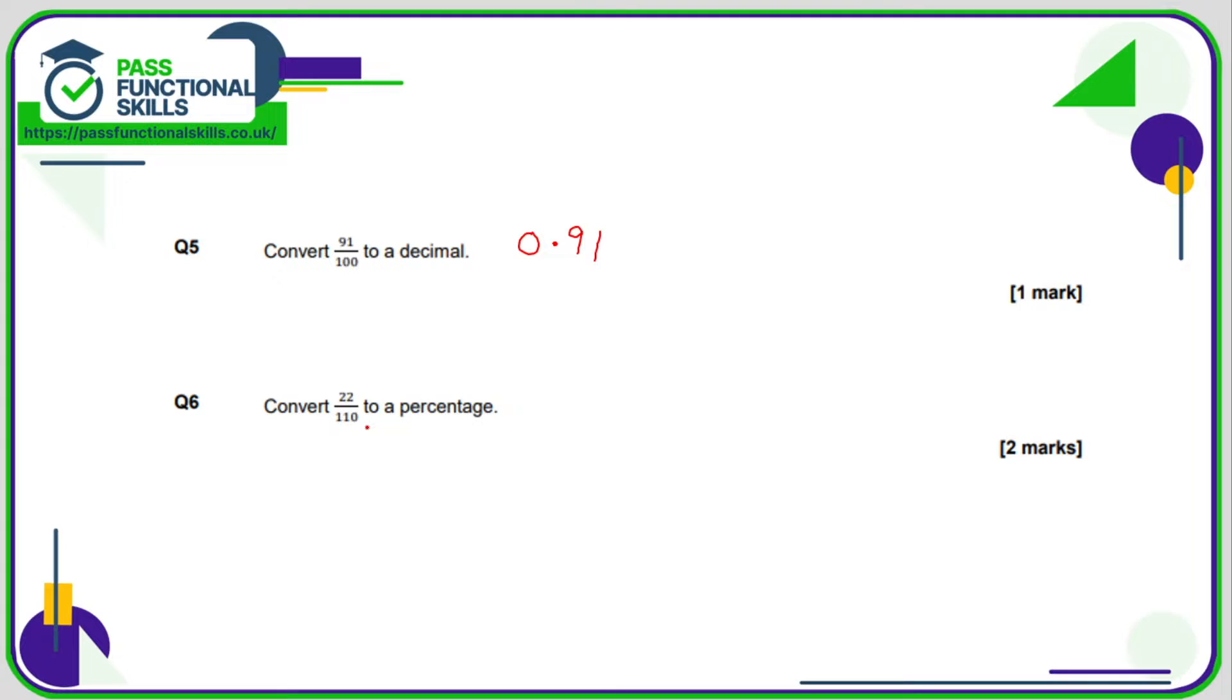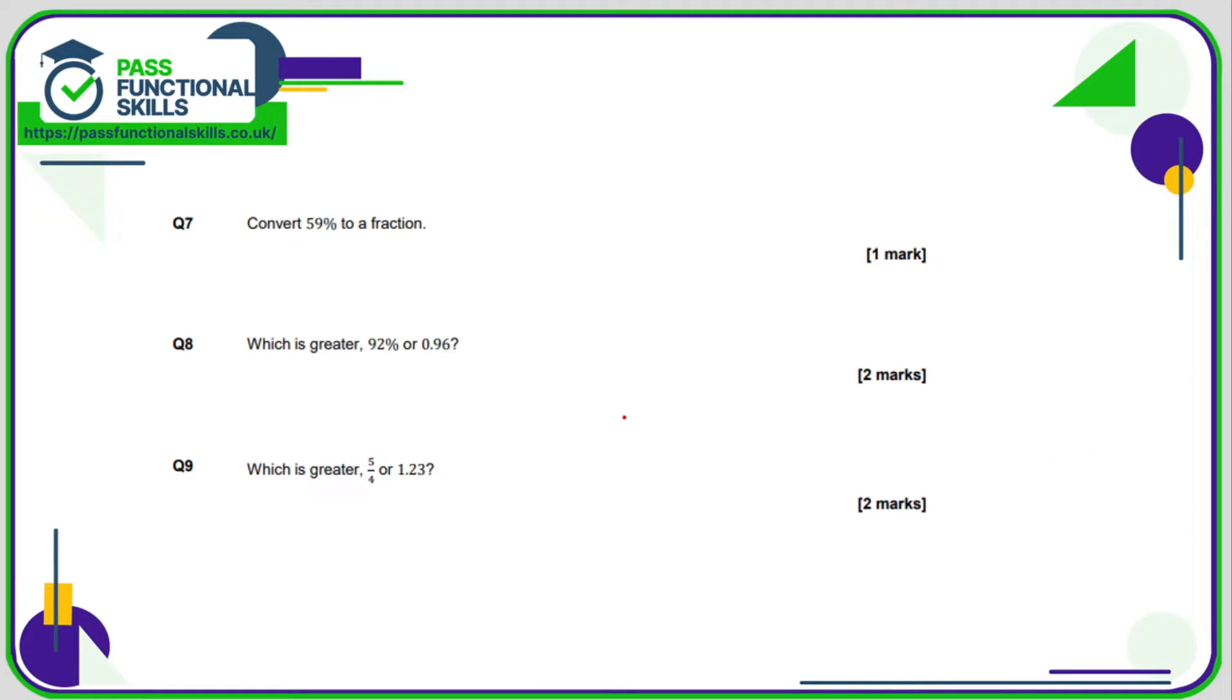Question number six. We are allowed to use a calculator which is a relief. A lot of people though forget how to convert fractions to percentages. It's top divided by the bottom and multiplied by 100. So 22 divided by 110 multiplied by 100 and that comes to 20%. Moving on, question number seven.